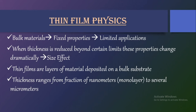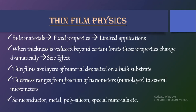If a number of layers are deposited one above the other, the thickness may vary from nanometer scale to micrometer scale. As the thickness is very small — in the scale of nanometers and micrometers — these are called thin films, and their application is very wide. Thin films can be fabricated from semiconductor, metal, polysilicon, or special materials like perovskites, and also dielectrics.